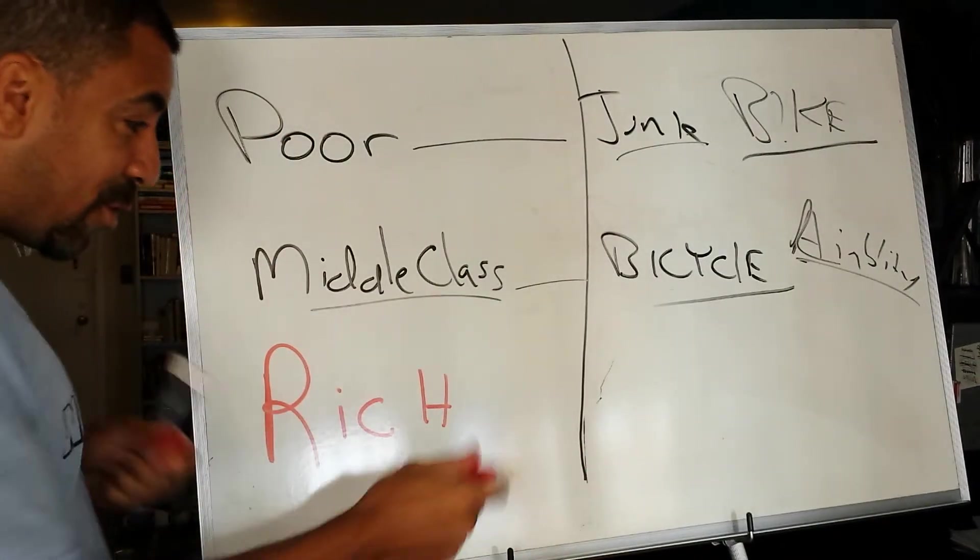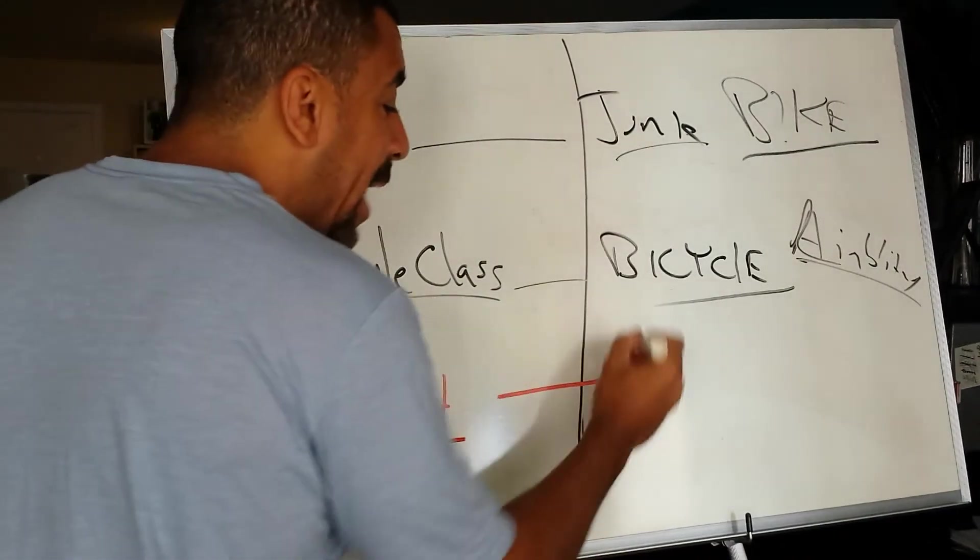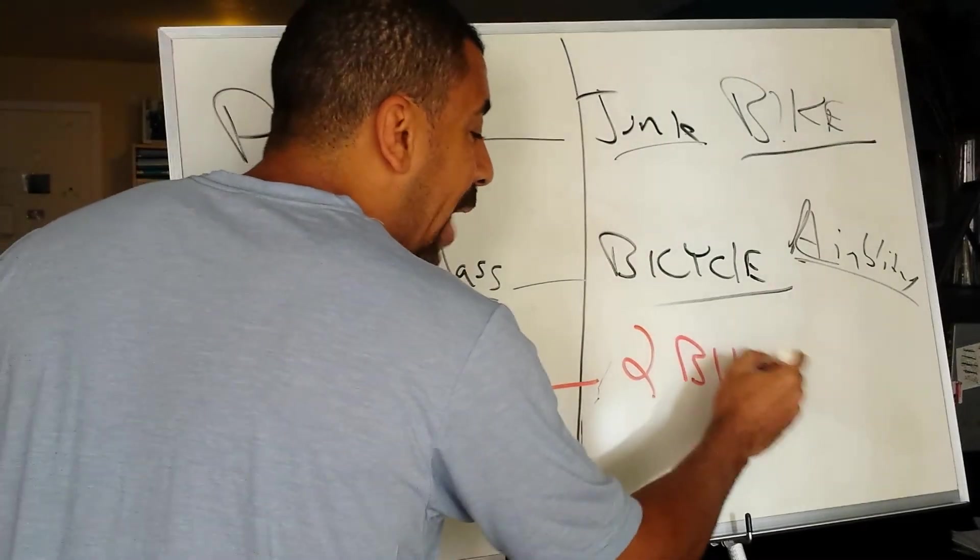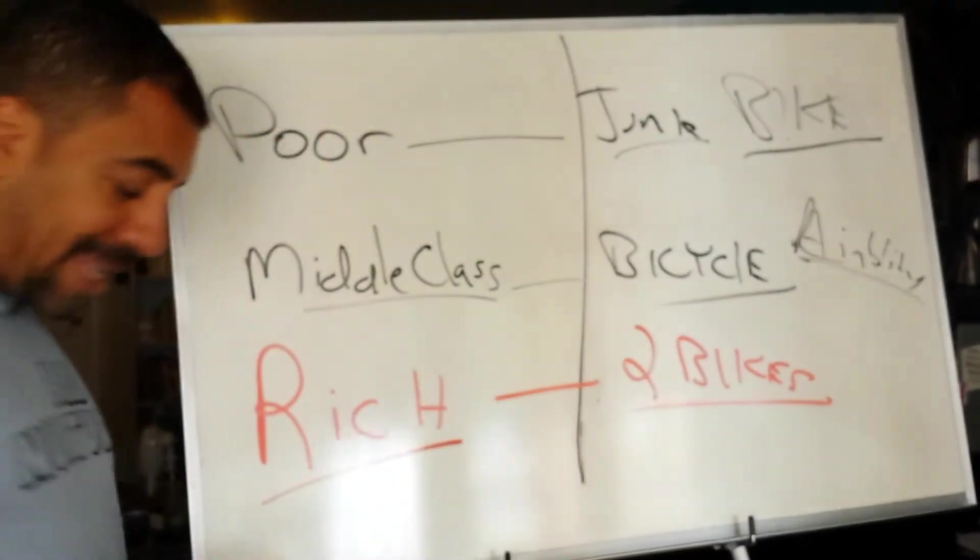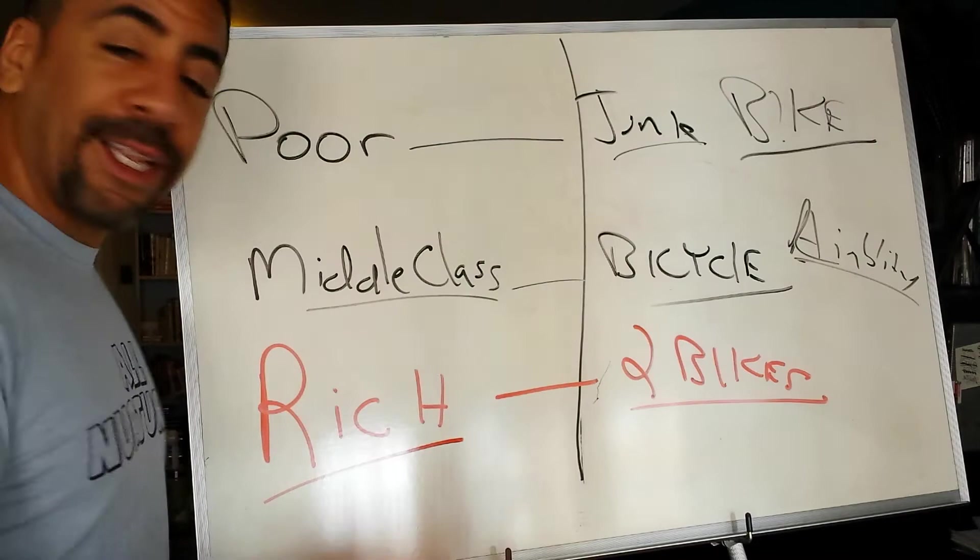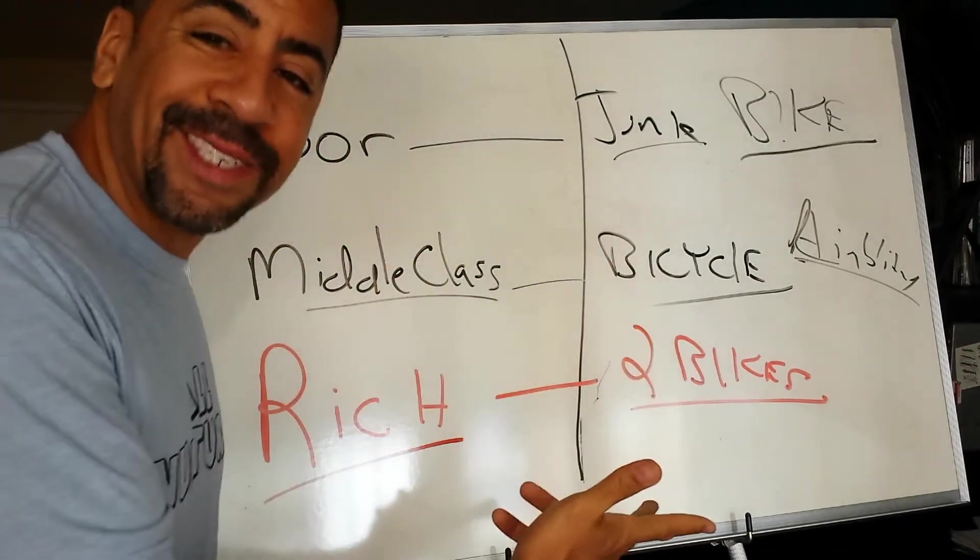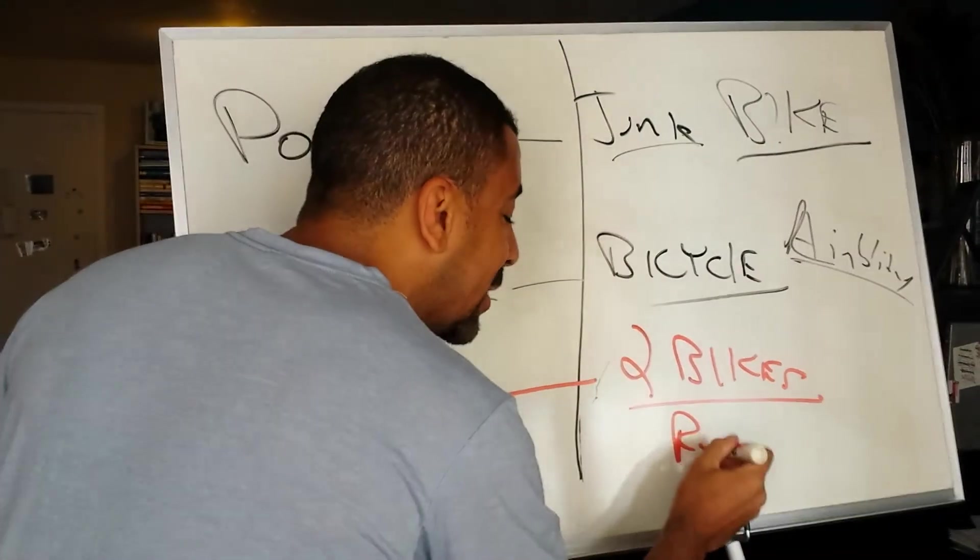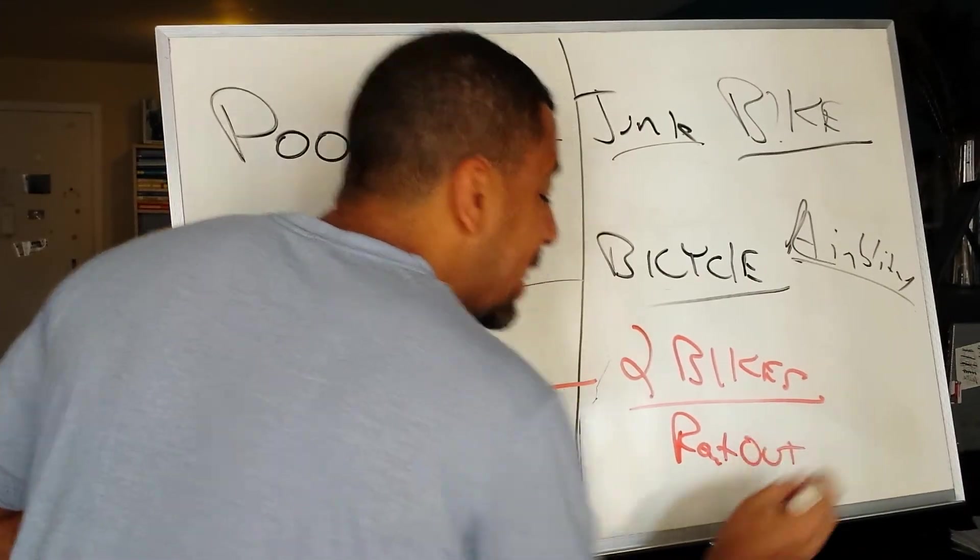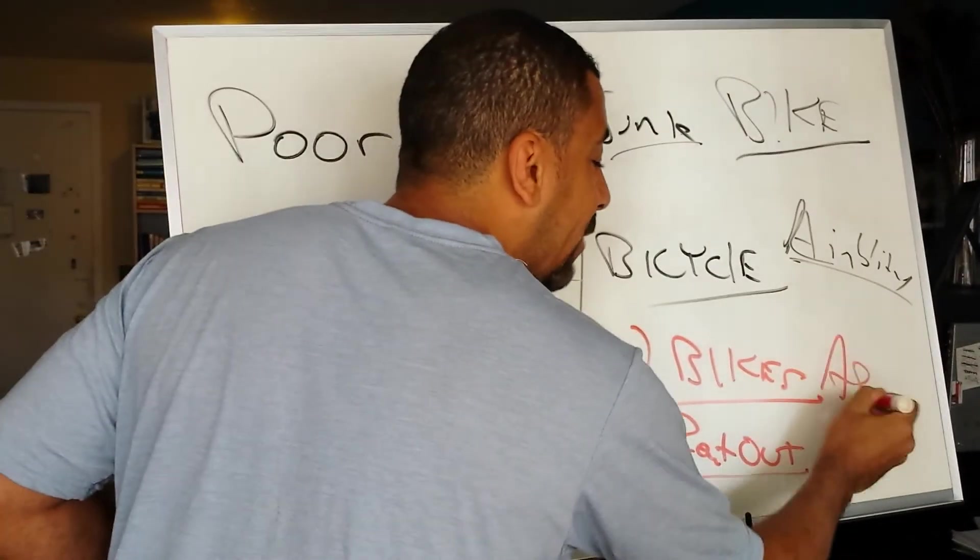But what a rich person might do, what a rich person will do, is go and buy two bikes. Instead of buying a bicycle, they'll buy two bikes, one to ride and one to rent out. While they rent out that second bike, that second bike becomes an asset for them.